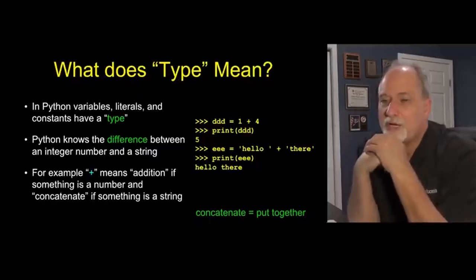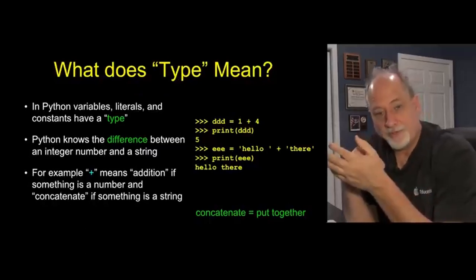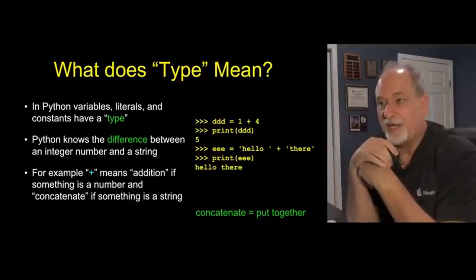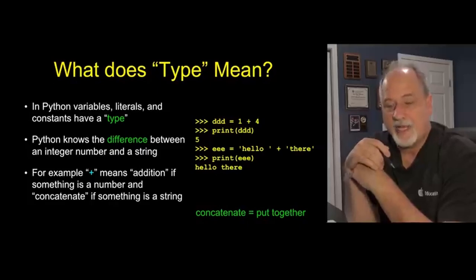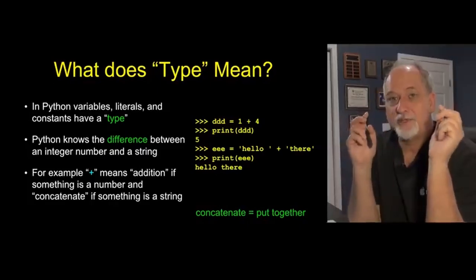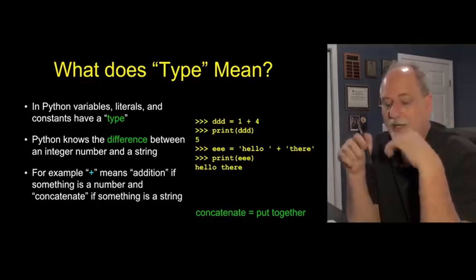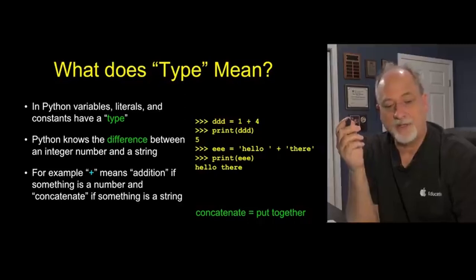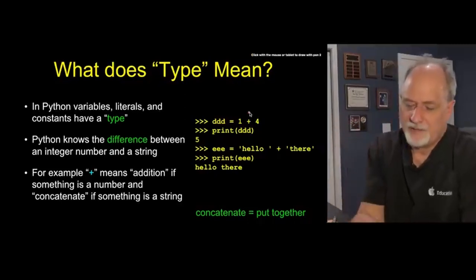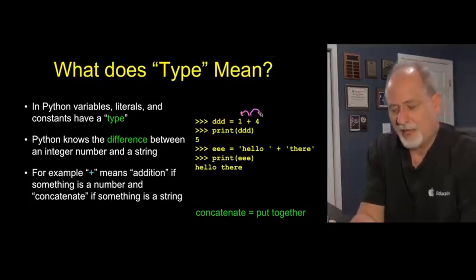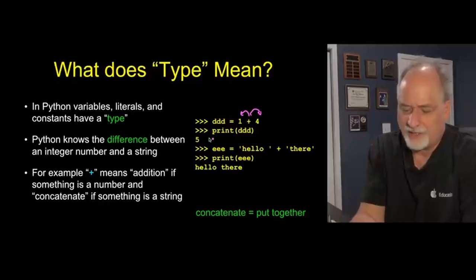We talked about variables and computing values to put inside variables, but the one thing you've maybe noticed as we go by is we have different kinds of data, we call it type. Is this of type integer, is this of type floating point number, is it of type string? Python is pretty smart about various kinds of types of data.